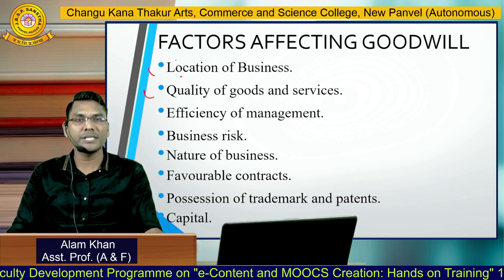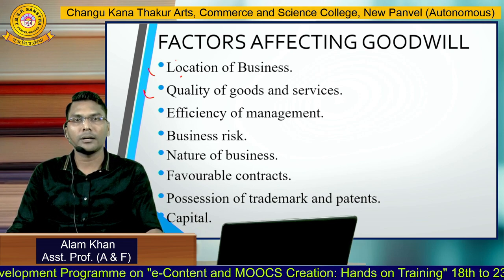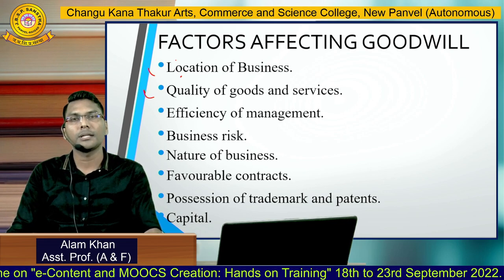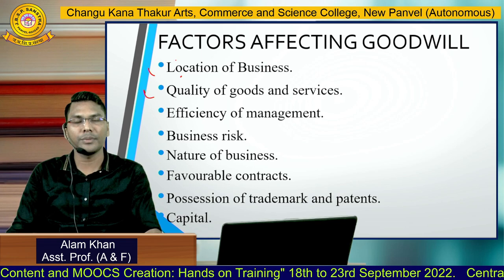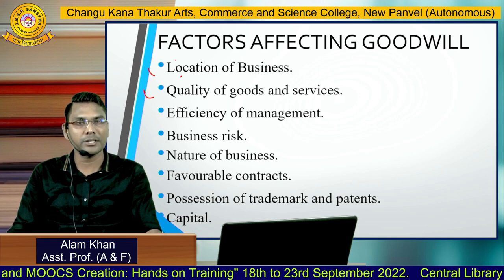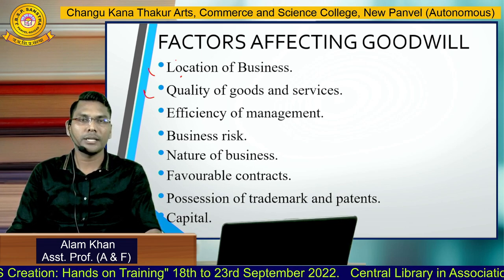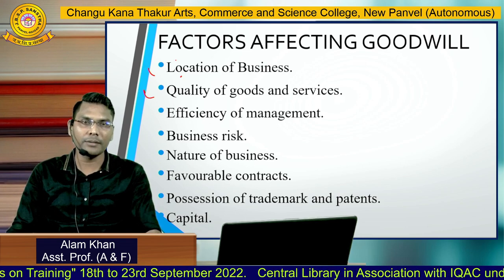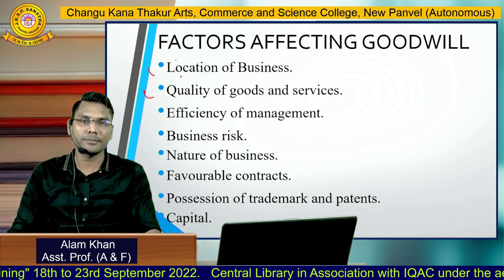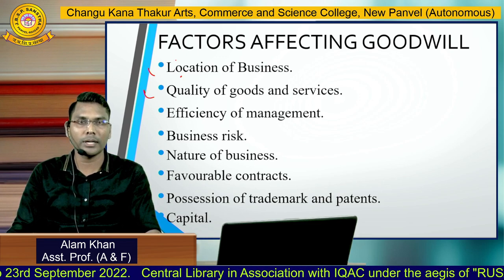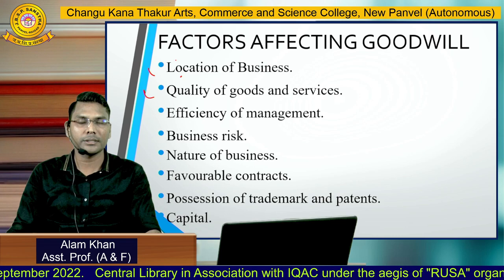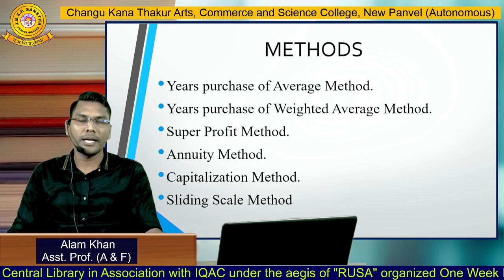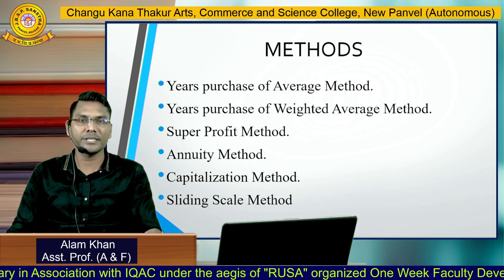There also has to be some business risk capability. The nature of business is also required for goodwill — there are two basic types of business: manufactured and non-manufactured. Next are favorable contracts, position of trademarks and patents. Last but not the least is capital — capital is also required for goodwill, and it depends on how much money you are investing into the business.